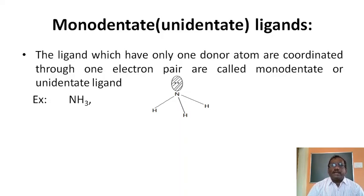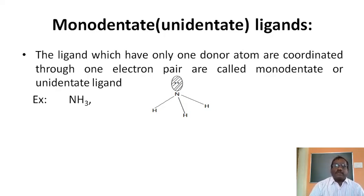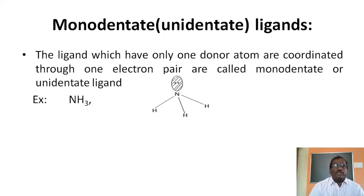Monodentate or unidentate ligands are those which have only one donor atom and coordinate through one electron pair. For example, NH3: the structure of NH3 is tetrahedral geometry, with nitrogen at the center and three hydrogens at the corners. The remaining apex of the tetrahedron is the lone pair of electrons on nitrogen, which donates to the central metallic ion. Hence, ammonia acts as a monodentate ligand with only one donor atom.